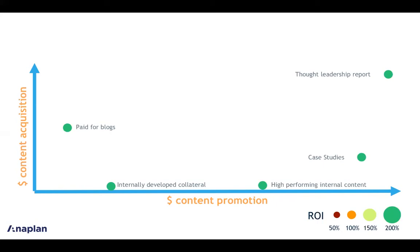As we look at this ROI, let's start with a couple of easy examples. High-performing internal content remains green and stays at 200 percent as we scale it out. Our internally developed collateral is at roughly 150 percent, and the reason for that may be because it's so cheap for us to acquire and we're not spending a huge amount on promotion — so that's looking okay.